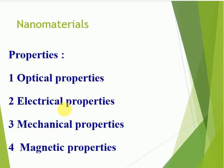Next: properties of nano materials. First, optical properties. These optical properties depend on the size, shape, and surface area of the nano material. These optical properties are used in optical detectors, lasers, sensors, displays, and solar cells.